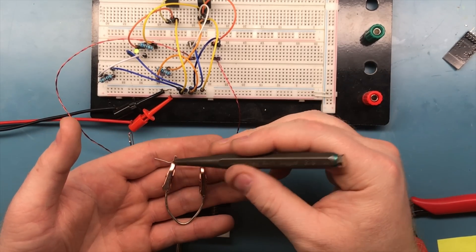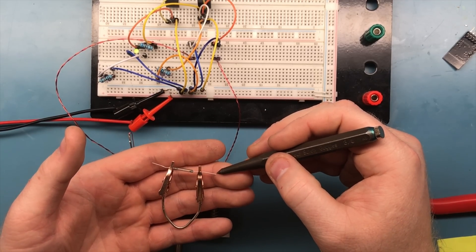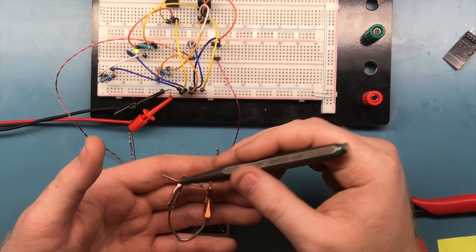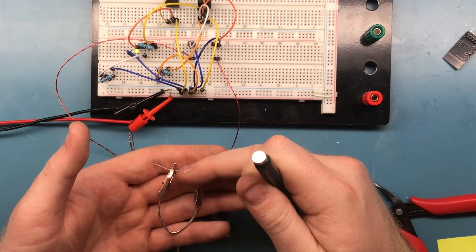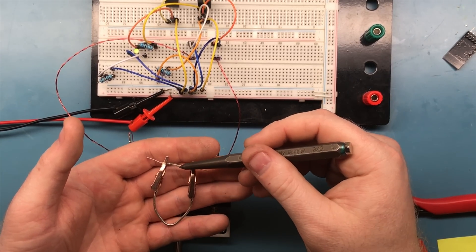You also don't want to alter the length of the leads of your reed switch because they're also ferrous material. The more of the lead you cut off, the less sensitive your switch becomes. The values on the data sheet are often assuming that you're using the stock lead length.